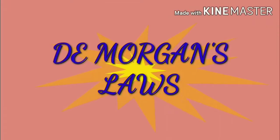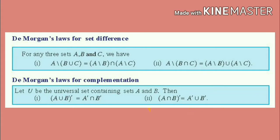We are going to learn about De Morgan's laws. De Morgan's laws has two types. The first one is De Morgan's laws for set difference. The second one is De Morgan's laws for complementation.